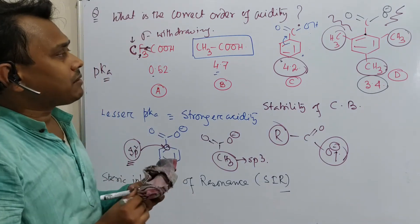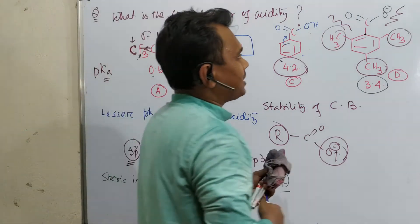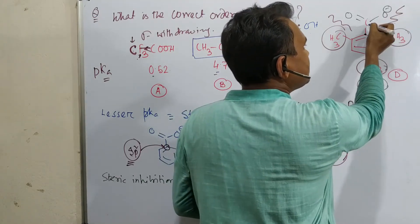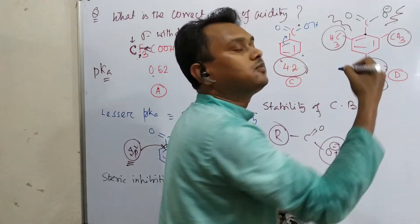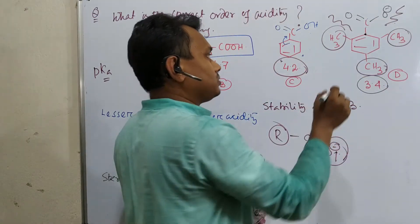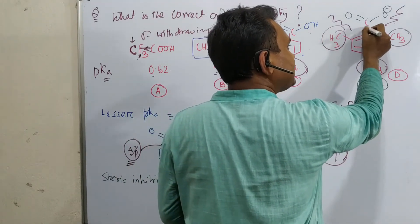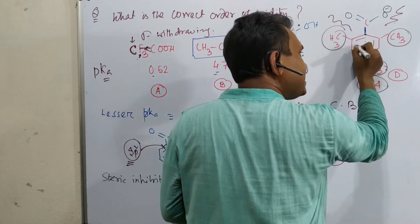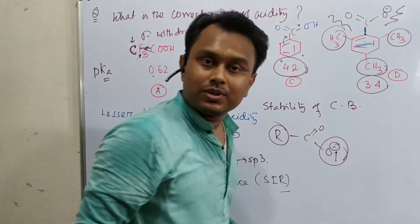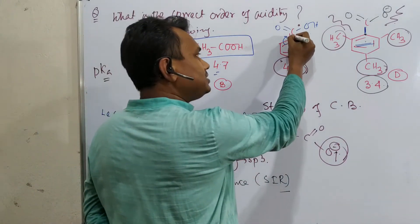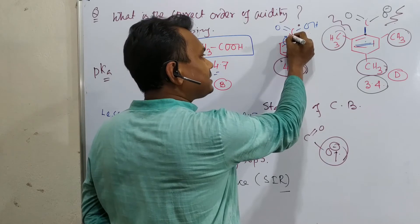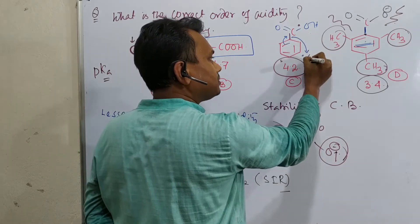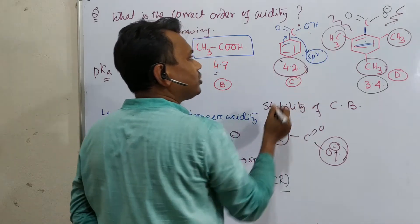So in this case, what happens? Because of this severe repulsion from these ortho groups, this carboxyl group remains out of plane. Now this group remains out of plane and it actually doesn't have any conjugation with this benzene nucleus. So what is the difference? See, in benzene, it is true that this is a SP2 carbon. It is actually withdrawing.